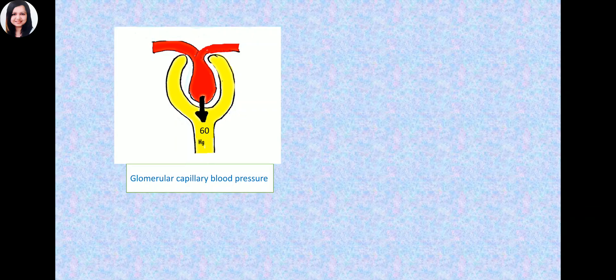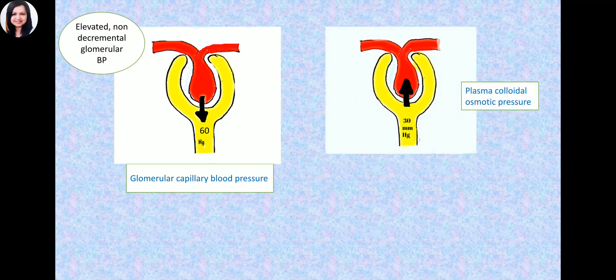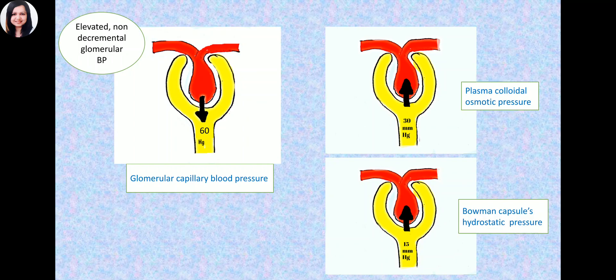Why is this glomerular capillary pressure so high? It is maintained because of the high caliber of the afferent arteriole compared to the efferent arteriole — blood can more readily enter the glomerulus through the wide afferent arteriole than it can leave through the narrower efferent arteriole. There is also high resistance of the efferent arteriole. Another difference from capillaries elsewhere is that the pressure pattern here is non-decremental — in other capillaries, pressure decreases along the length, but in glomerular capillaries the pressure remains the same: elevated and non-decremental. This favors filtration.